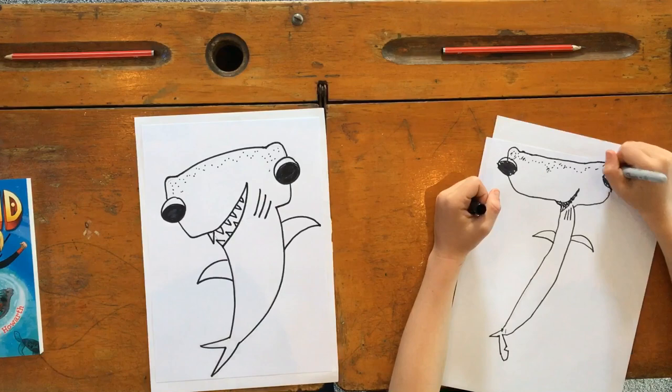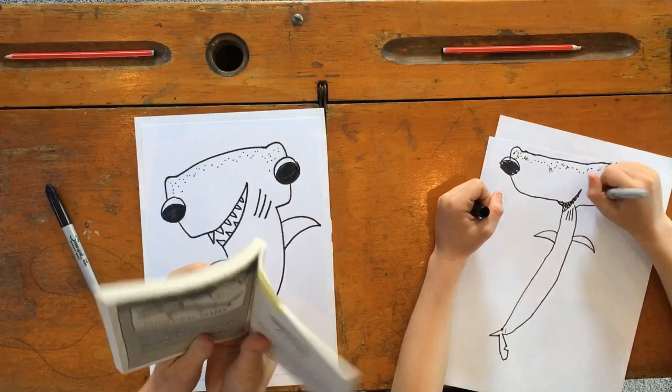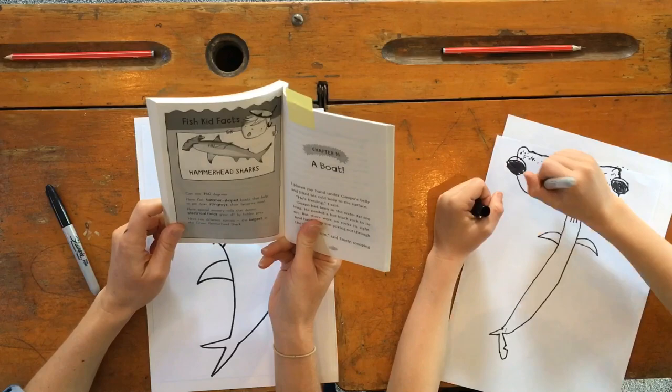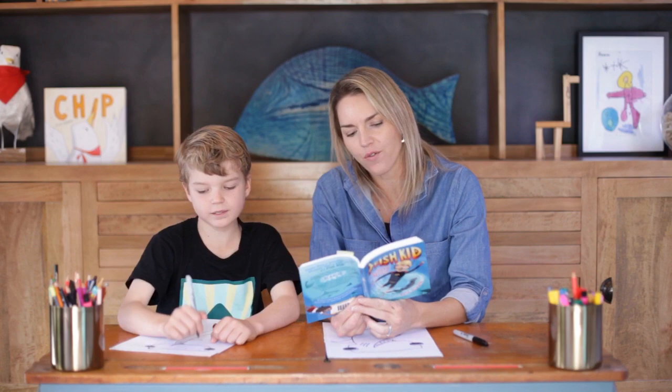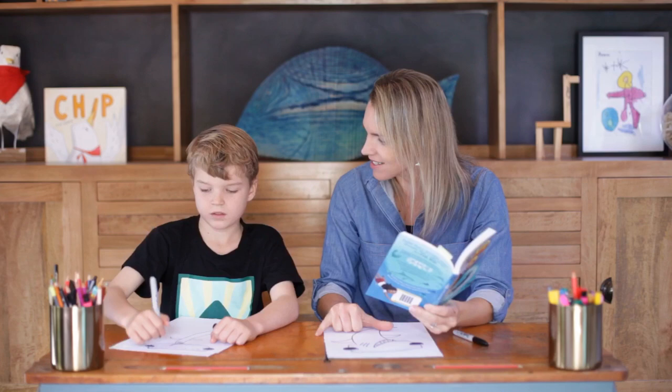While you do your dots, I'm going to read you some facts about hammerhead sharks from the book Fish Kid. So hammerhead sharks can see 360 degrees. So they can see all the way around them. Did you know that? Yeah. That's pretty cool. That's why I put sensors all around them. Hammerheads have flat hammerhead shaped heads that help them pin down stingrays because they love eating stingrays. That's pretty cool.